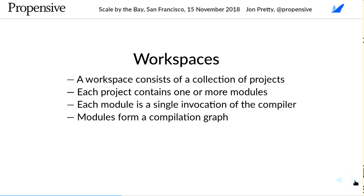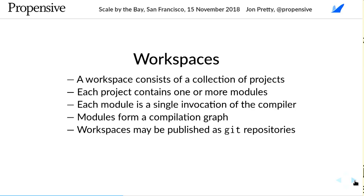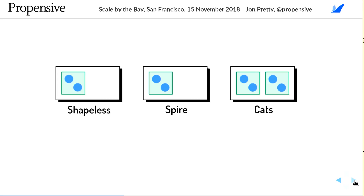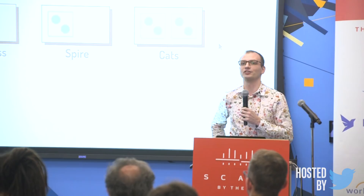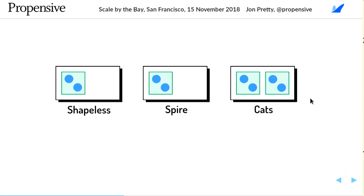We can publish workspaces as Git repositories. In this diagram, the rectangles represent workspaces, the green squares are projects, and the blue dots are modules within them.